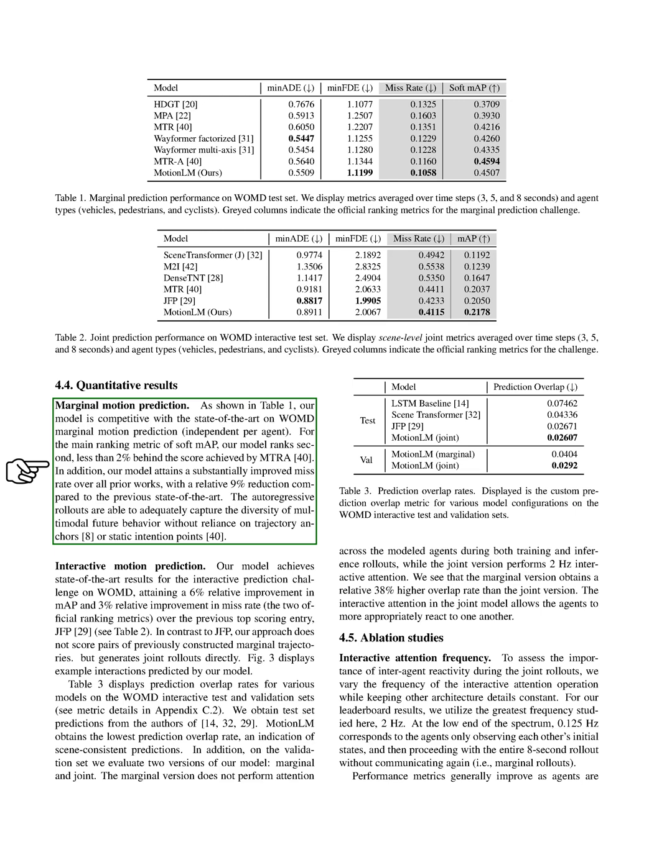Section Interactive Motion Prediction. Our model has achieved the best results in the interactive prediction challenge, showing a 6% improvement in the mean average precision map and a 3% improvement in the miss rate compared to the previous top scoring entry. Unlike the previous approach, our model doesn't score pairs of pre-built marginal trajectories but generates joint rollouts directly. We've found that our model has the lowest prediction overlap rate, which suggests that it makes predictions that are consistent with the scene. We tested two versions of our model on the validation set, one that doesn't use attention across the agents during rollouts (marginal) and one that does (joint). The joint version, which uses interactive attention at a frequency of 2 Hz, had a 38% lower overlap rate than the marginal version.